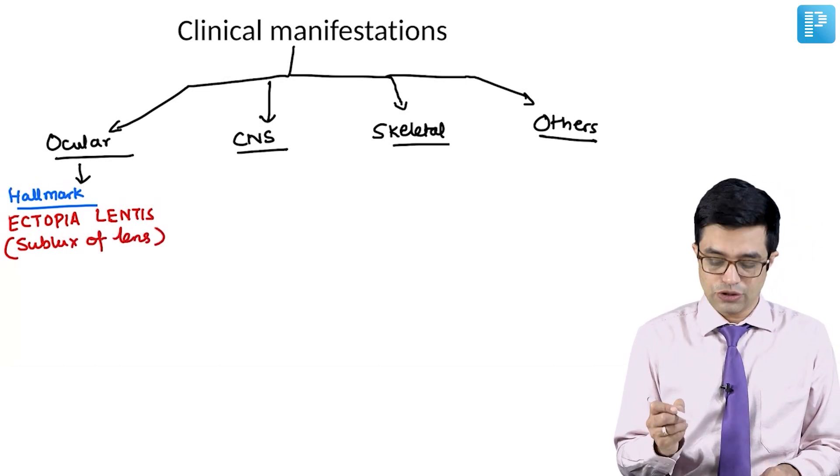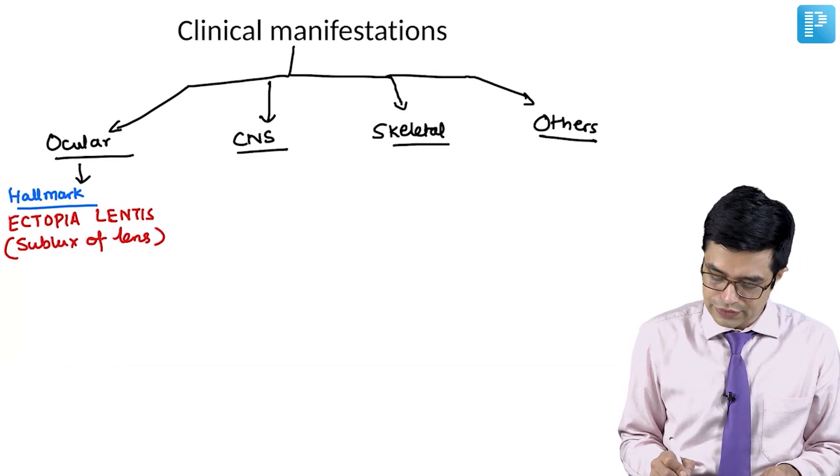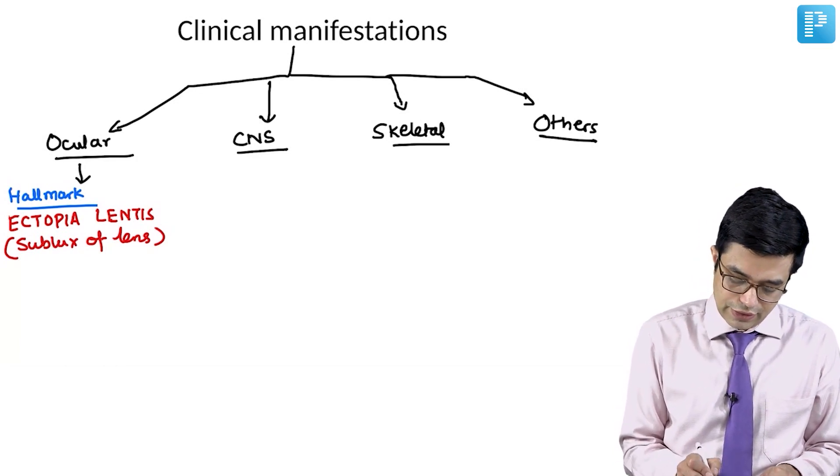This subluxation of the lens of the eye typically appears between 3 to 8 years.